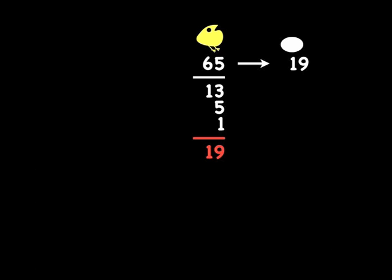Now we go to the number 19 and do the same thing. What are the proper divisors of 19? Well, 19 is prime, so the only proper divisor is 1, and so we go to 1.